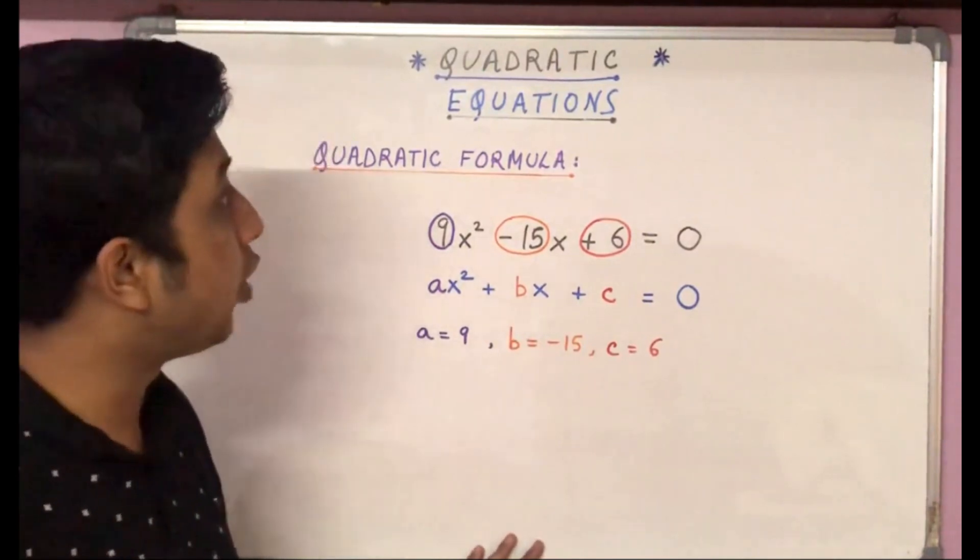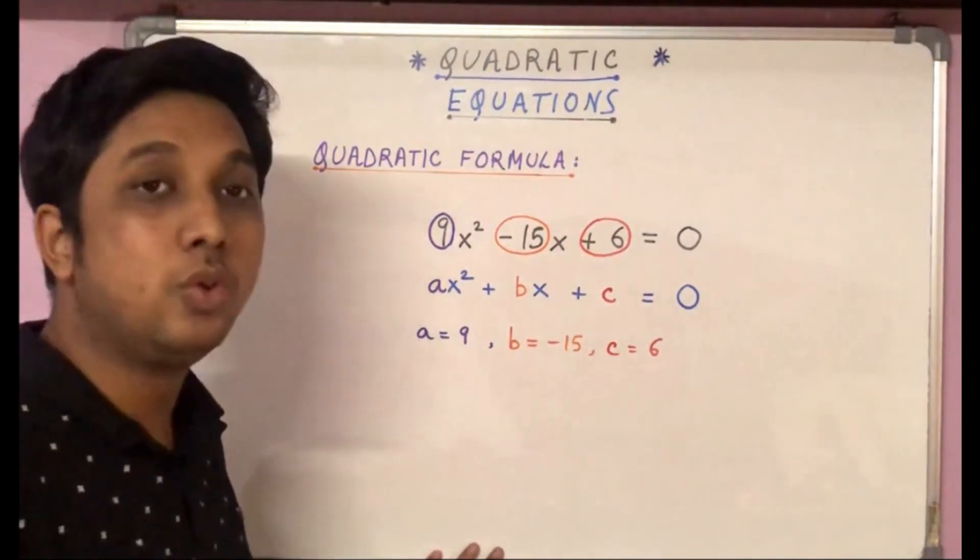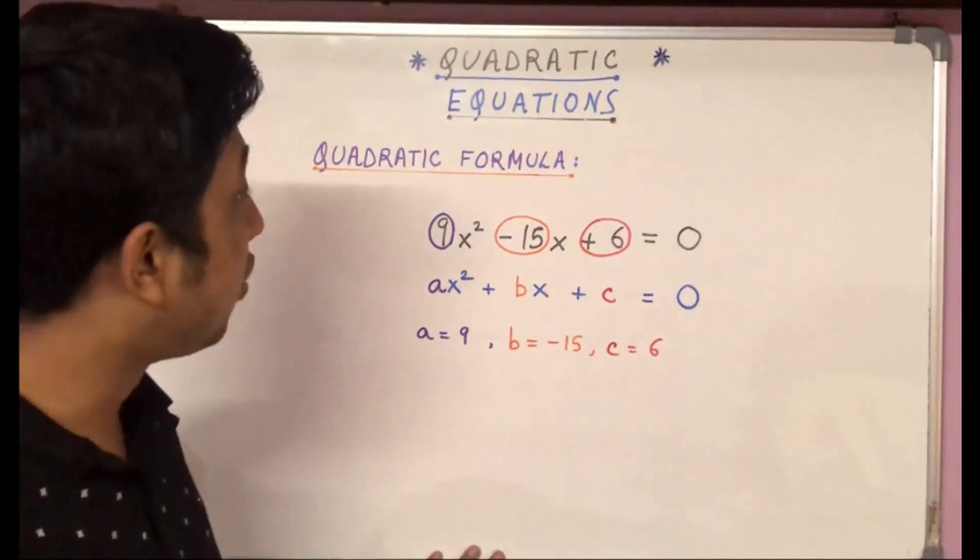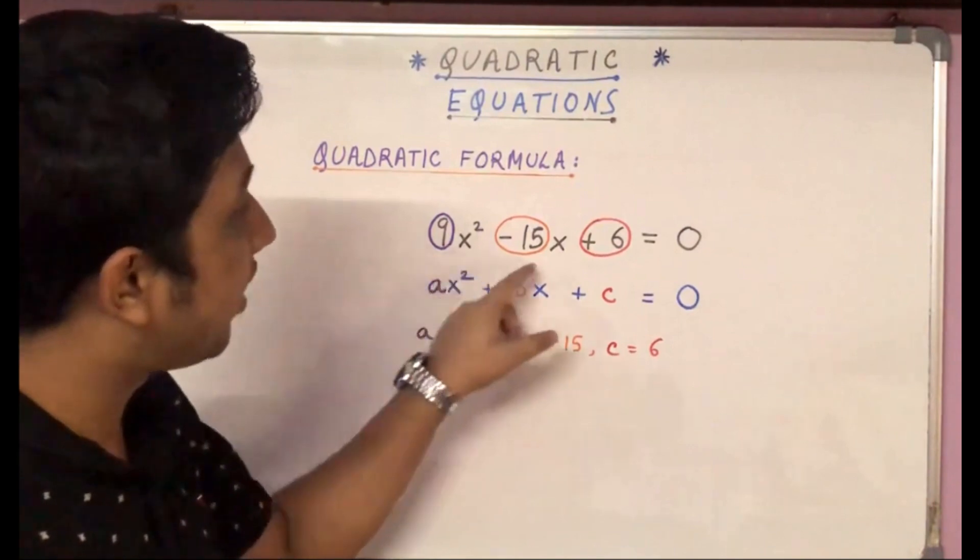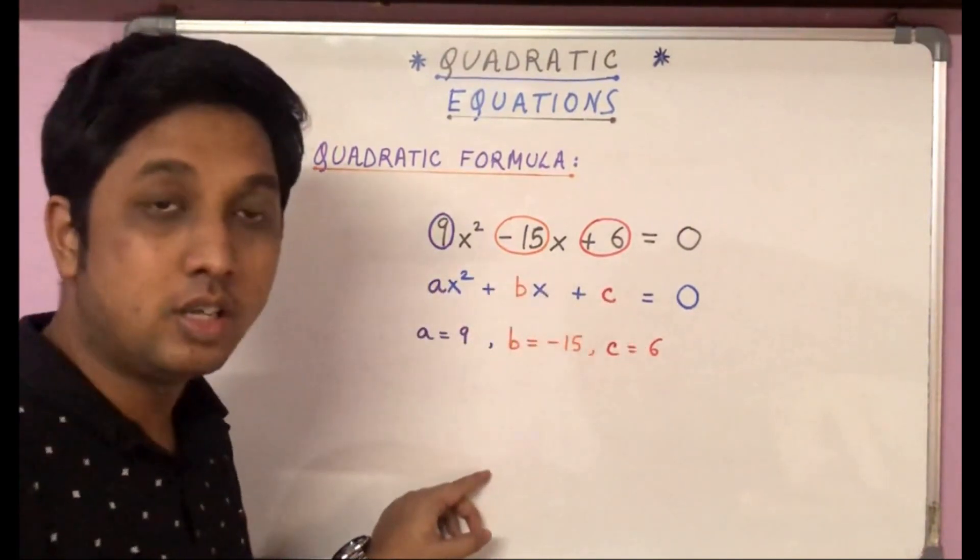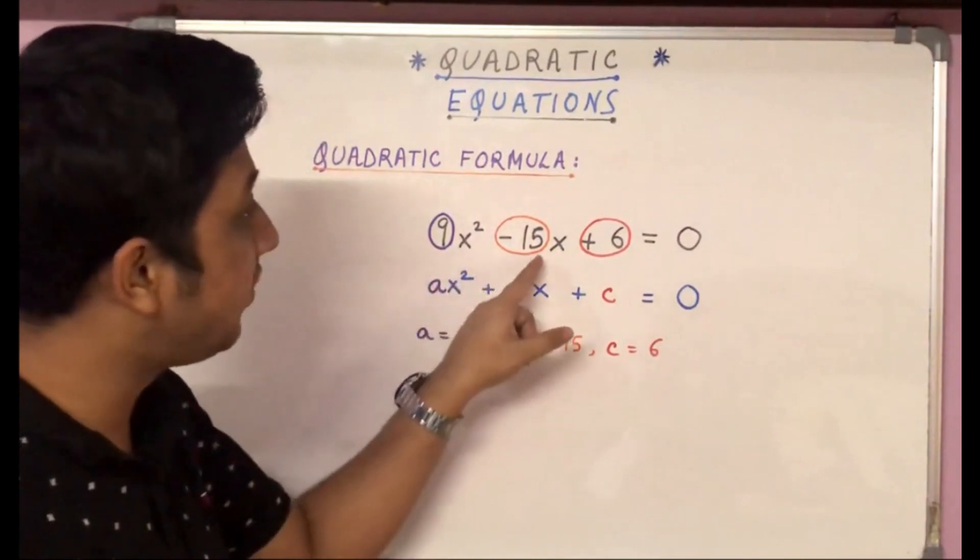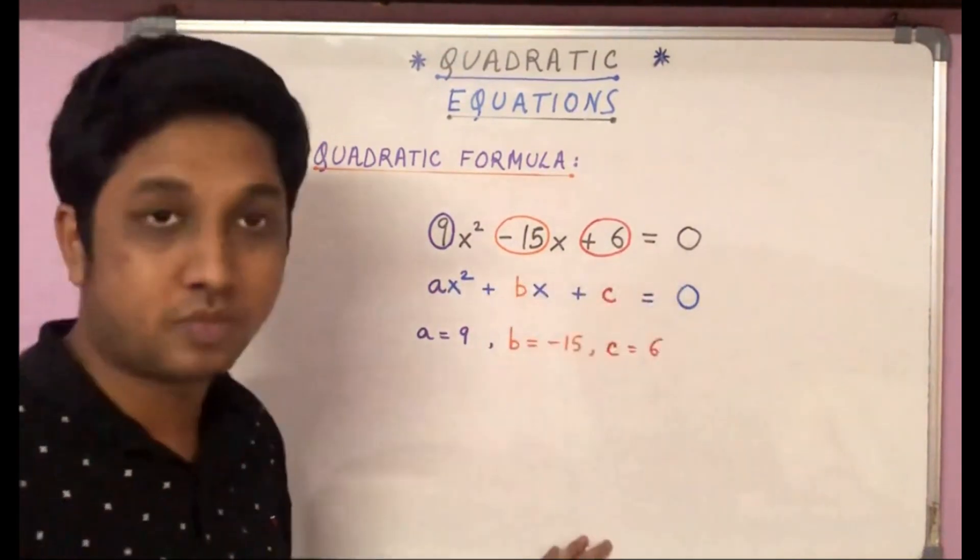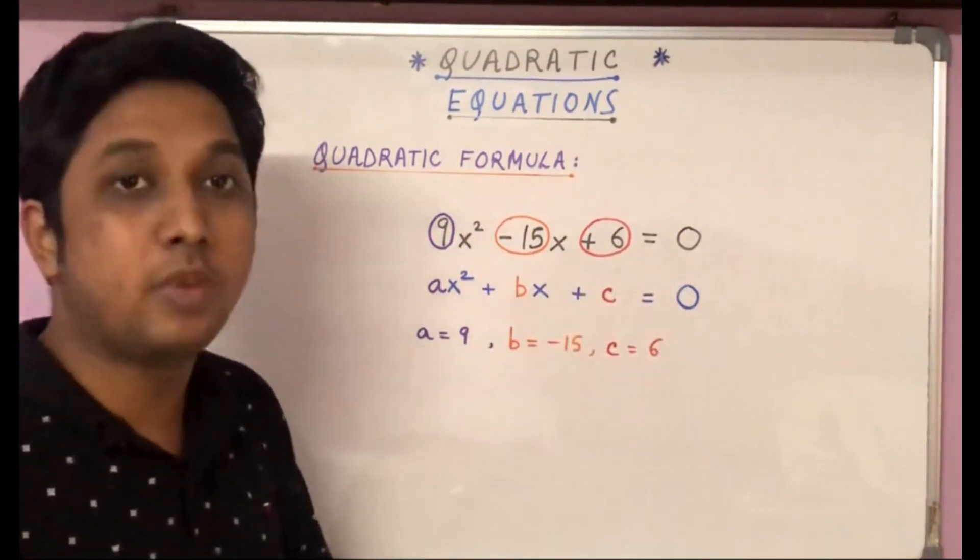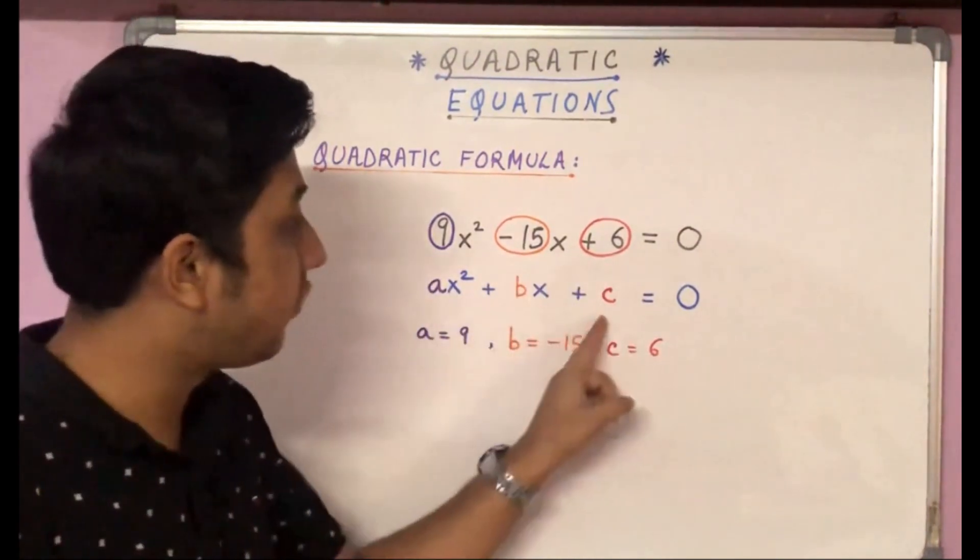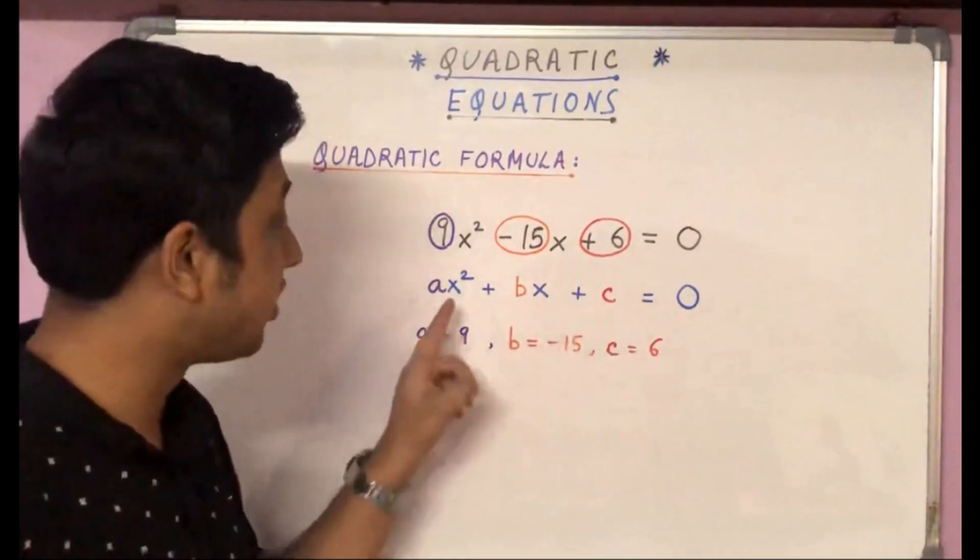In this video we are going to talk about solving quadratic equations using quadratic formula, or what we call Sridhar Acharya formula. Let's take an equation. Suppose we have a quadratic equation, that means an equation with degree 2. Example: 9x² - 15x + 6 = 0. Now the first thing that we need to do here is we need to compare the given equation with the standard form of the quadratic equation, which is ax² + bx + c = 0.